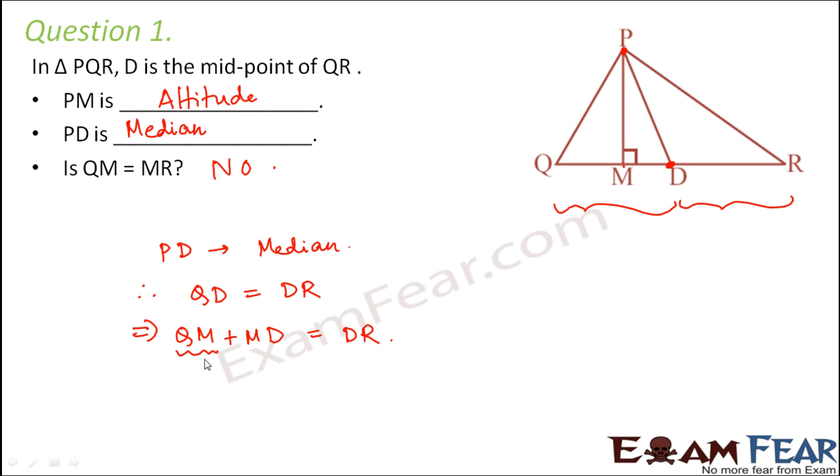Now the question says, is QM equal to MR? So QM we already have here, but MR we do not have. So how can we get MR? In order to get MR, we have to add MD to DR. So let us add MD on both sides of the equation.